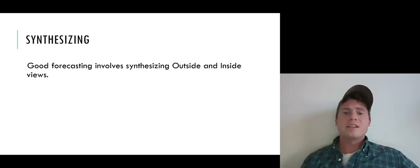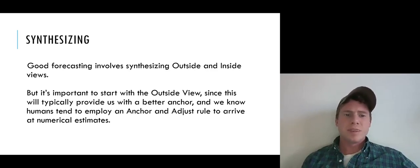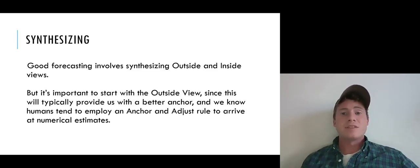The takeaway here is that good forecasting involves synthesizing both outside and inside views, or outside and inside perspectives. But it's important to start with the outside view, since this will typically provide us with a better anchor than if we start with our inside view. And we know that humans tend to employ an anchor and adjust heuristic to arrive at numerical estimates. So if we start with the outside view, we'll start with a better anchor and then adjust it a bit, ending up with a better final estimate than if we started with the inside view and then tried to work backwards to consider the outside view.